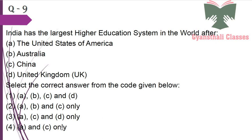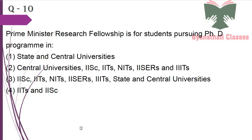Next question: India has the largest higher education system in the world after the United States of America and after China, so the answer is A and C. Next question: Prime Minister Research Fellowship is for students pursuing a PhD program in IITs and IISc.